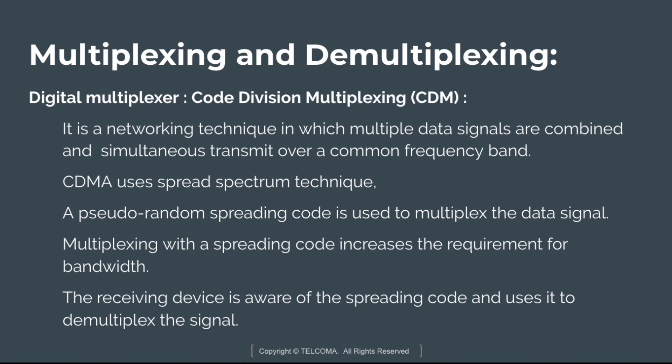In spread spectrum, a data signal is sent over a range of frequencies within an assigned frequency spectrum, and the receiving device is aware of the spreading code. CDMA uses a 2D multiplexing signal and is used in 2G and 3G cellular networks. The code used by the transmitter is also known to the receiver, which uses it to decrypt the signal. This concludes the overview of multiplexing and demultiplexing. Thank you.